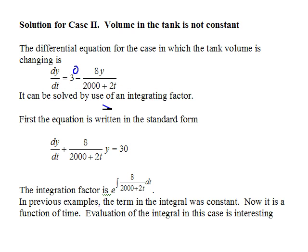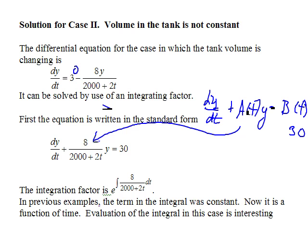dy/dt, you need that first derivative isolated, plus some function of t. Here's the formula: dy/dt plus a(t) times y equals b(t). In this case, b(t) is just a constant, 30, but a is a function of t. It's 8 divided by 2,000 plus 2t. That's a.